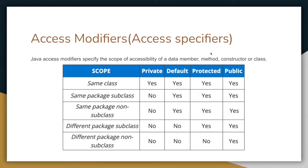Access modifiers define the scope of availability of data members to other classes and methods. Consider a class as your room, the same package as your house, and different packages as other apartments. In your room, only you are allowed to do anything — that is like private, accessible only to you. Default is like within your house where other members of the same package can also access it.